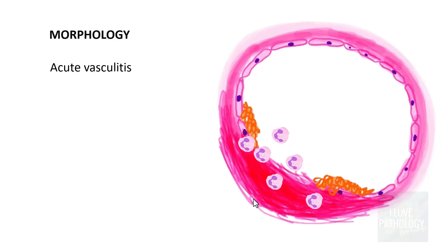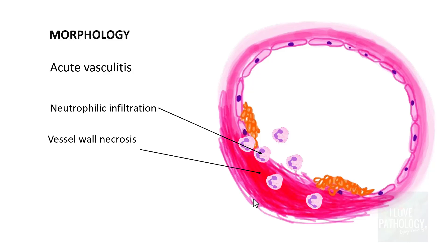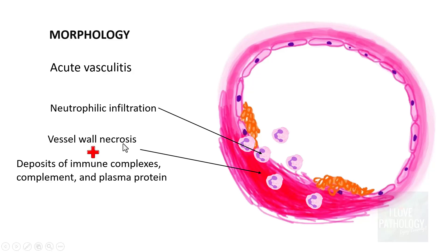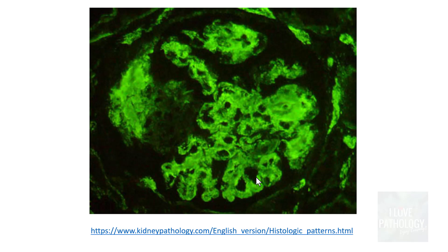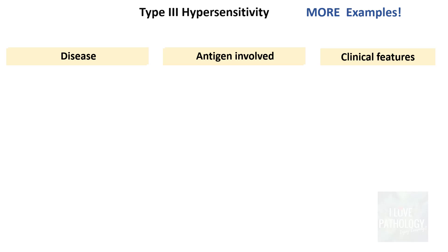The morphology of type 3 hypersensitivity reactions typically shows acute vasculitis — neutrophil infiltration in the walls of blood vessels along with necrosis of the vessel wall. This necrosis, combined with deposits of immune complexes, complement, and plasma proteins, leads to fibrinoid necrosis — a smudgy, brightly eosinophilic area of tissue destruction. Fibrinoid necrosis is very characteristic of immune complex-mediated vessel wall injury. In the glomerulus, immunofluorescence microscopy reveals granular deposits.